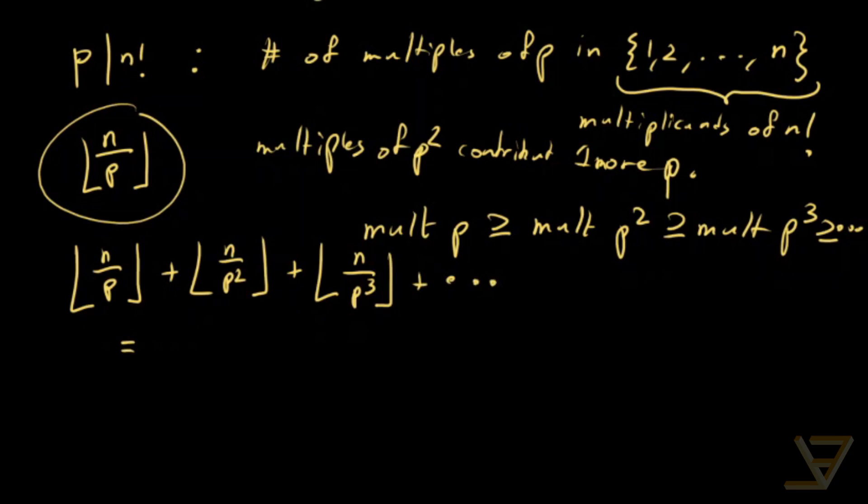And this is equal to the sum k equals to 1 to infinity of n over p to the k. I guess I should use i since we used k earlier. So I'll use i over here.